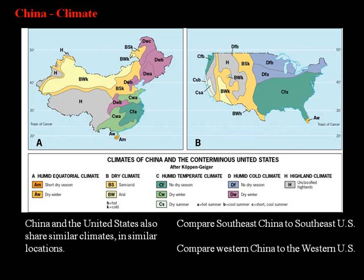Also, the dry climate — the BWK climate class that you see in the Chinese west — we also have that BWK climate class in the western part of the United States as well. So climatically speaking, China and the United States are pretty similar in terms of their climate classes, even looking at the humid-cold climate, which tends to be in our north and northeast and is also in their north and northeast as well. China and the United States have very similar climates in very similar locations, just as their overall sizes are relatively similar.